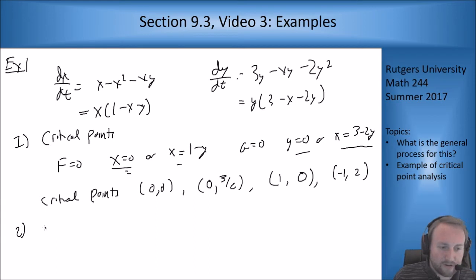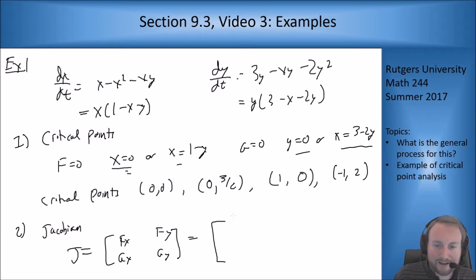Two, Jacobian. A trick is to compute the Jacobian right away and then plug it in at all four points. The matrix J is fx, fy, gx, gy, which gives us: 1 minus 2x minus y, minus x, minus y, and 3 minus x minus 4y. Now let's evaluate at each point.